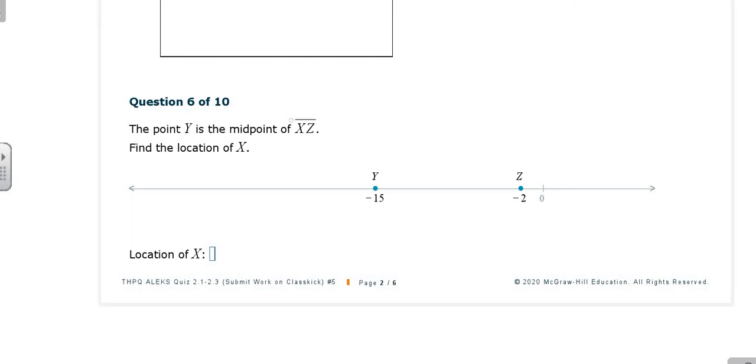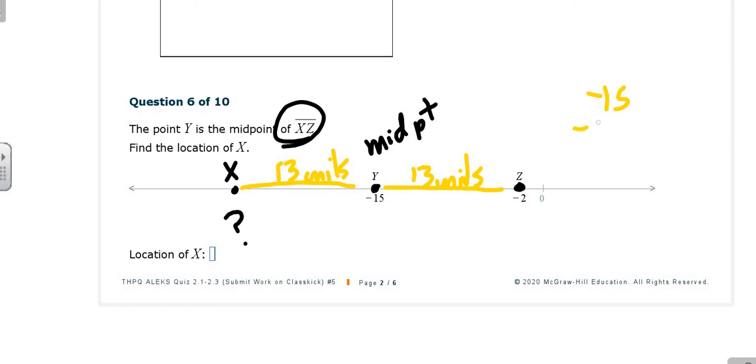It says that Y is the midpoint, it's the middle of XZ. So there's our Z's. The question is, where would X have to be in order for this to be a true statement? Once again, you're looking at midpoint, meaning equal on both sides. So from negative 2 to negative 15 is 13 units. So if I go 13 units this way, I'm at negative 15. I'm going to go farther down 13 units. I'm going to be at the position of negative 28 as my coordinate for X.